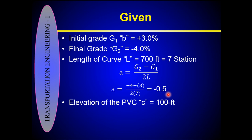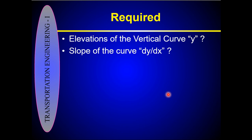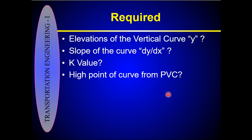The elevation of the PVC, denoted by small c, is 100 feet. We need to calculate: the elevations of the vertical curve (small y), the slope of the curve (dy/dx), the K value, and the position of the highest point of the curve — expressed as a distance x from the PVC.